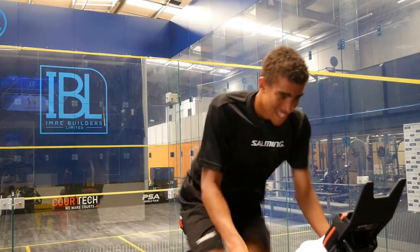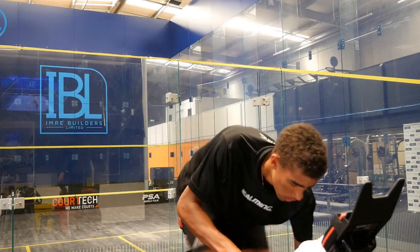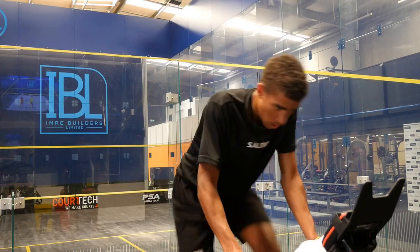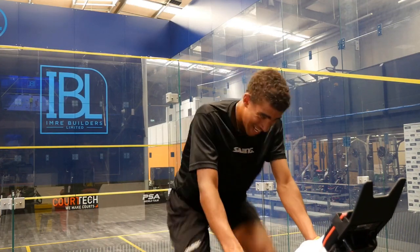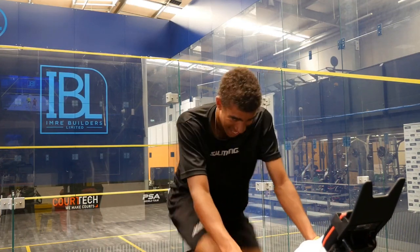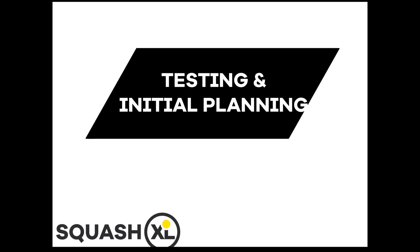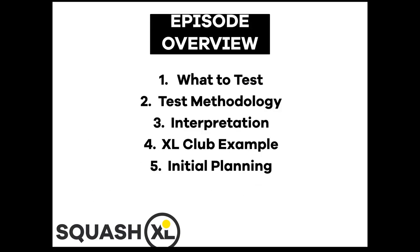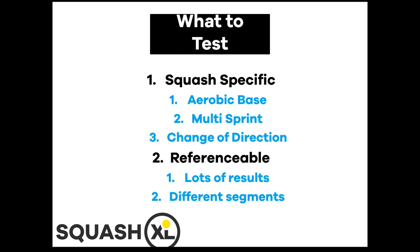In this video we cover in simple terms our views on squash athlete testing and initial planning. In the first episode we listed the topics and this is the third of seven in the series. We will look at what and how to test, how we interpret test results and come up with an initial fitness training plan. During the video we'll demonstrate a simple club test we run as an example.